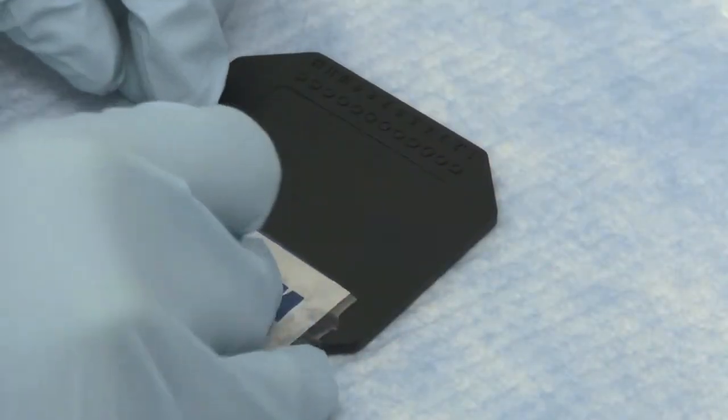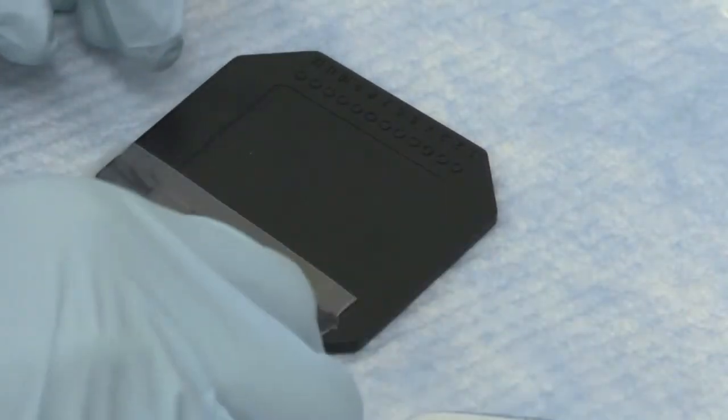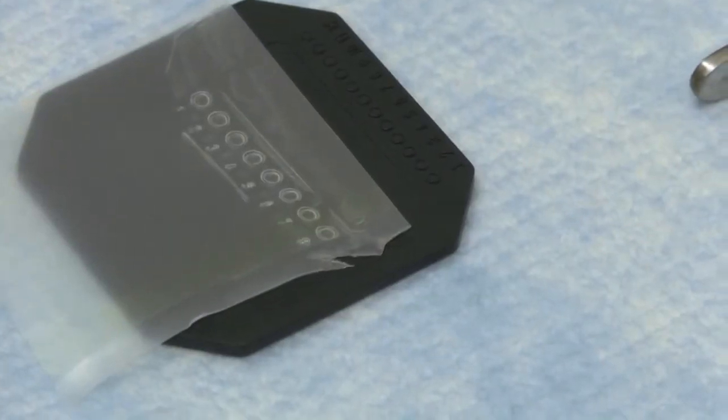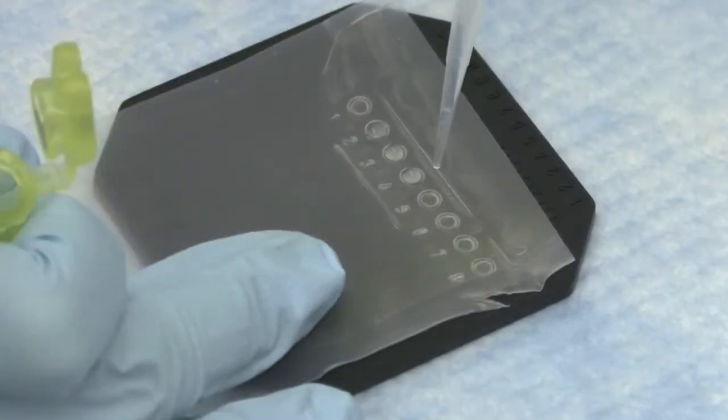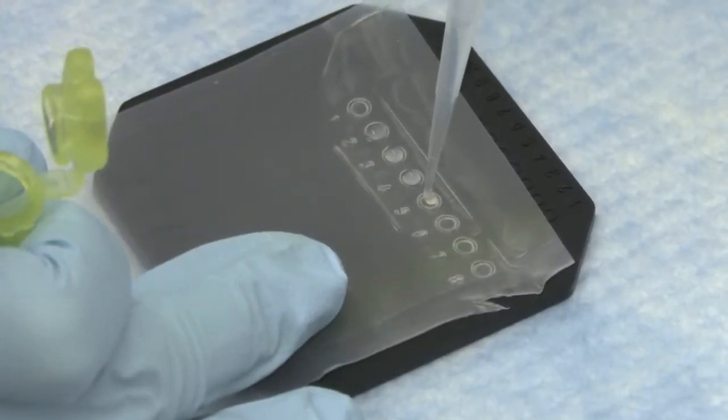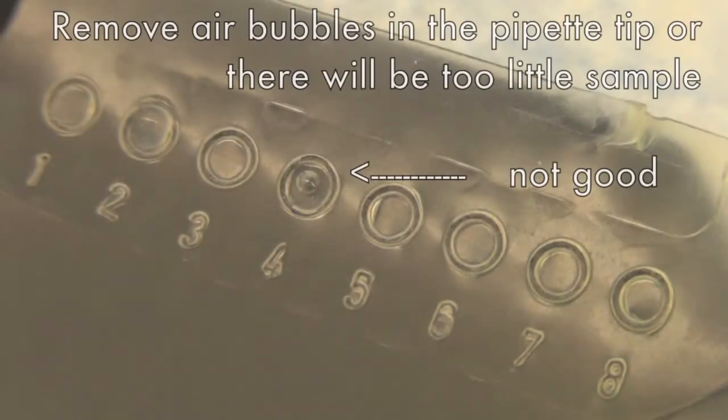Remove the white piece of the parafilm on the sample holder. Start loading samples and the marker onto the sample holder with a pipet set at 5 microliters. Record which sample you have put in which lane. Make sure no air bubbles are observed, otherwise in the next step you may not obtain the proper amount of sample.